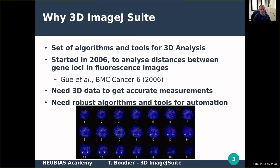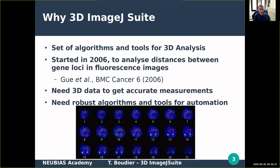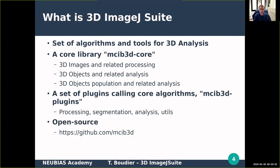Why did we start this 3D Image Suite? It's quite an old software — it started in 2006. The question was quite simple: how to analyze distances between genes in fluorescence microscopy images. We wanted accurate measurements and a lot of measurements for good statistics. So we needed to develop 3D algorithms and tools.